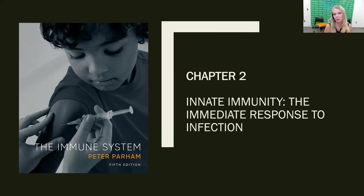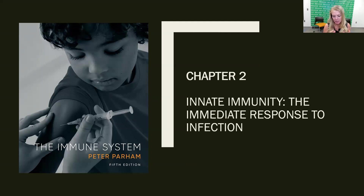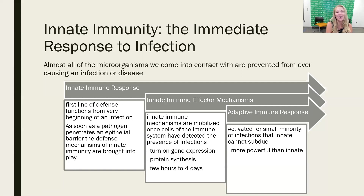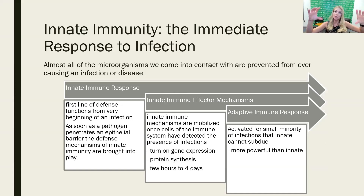Chapter two is where we are going to really start to look at how the immune system works. Chapters two and three are going to be dedicated to the innate immune system. Let's recall what those levels of the immune system are. When we ended chapter one, we talked about how there's this outer barrier, then the innate immune system, which then moved into the adaptive, and then finally memory.